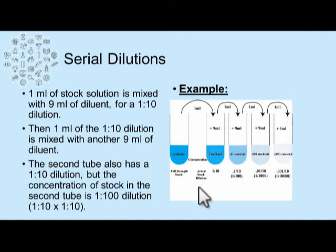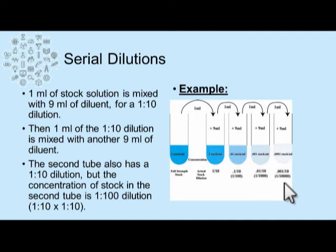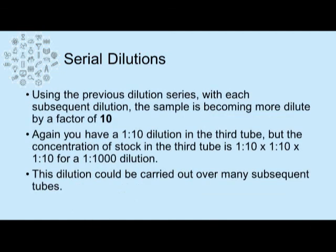Multiplying them out: one, from the stock solution, times ten gives you one to ten. The next 10x dilution would be 100, then 1000, then times another 10 would be 10,000. So you titrate that out. Using this dilution series, each subsequent dilution makes the sample more dilute by a factor of ten. In the third tube, the concentration would be one tenth of the one to ten dilution, so 10 times 10 times 10 is one to 1000. That dilution can be carried out over however many subsequent dilutions you need.